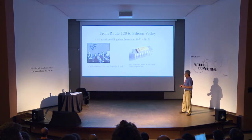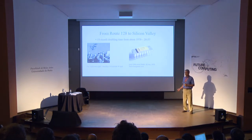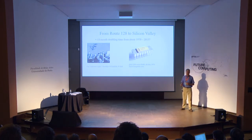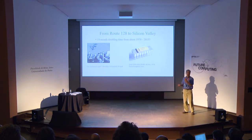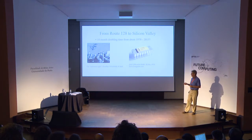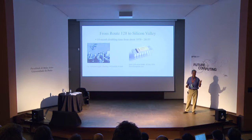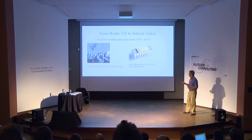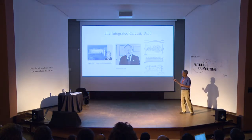Eight people resigned en masse and joined Fairchild — the so-called Traitorous Eight, including Robert Noyce. Fairchild was a camera company — Sherman Fairchild was an early IBM investor with money. They started a semiconductor company. Then they left Fairchild and founded Intel, which is still around. This is the Silicon Valley way — you leave a company, start a startup, and money is relatively easy to get with a good business plan.